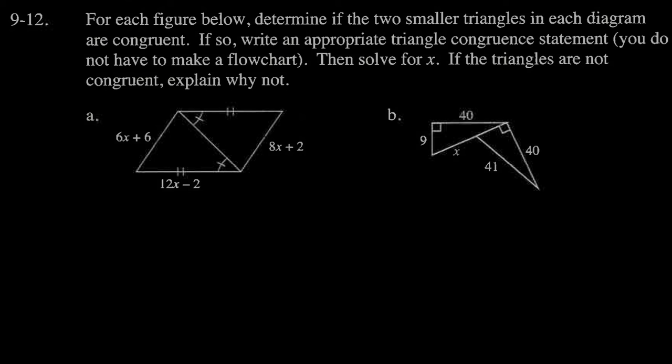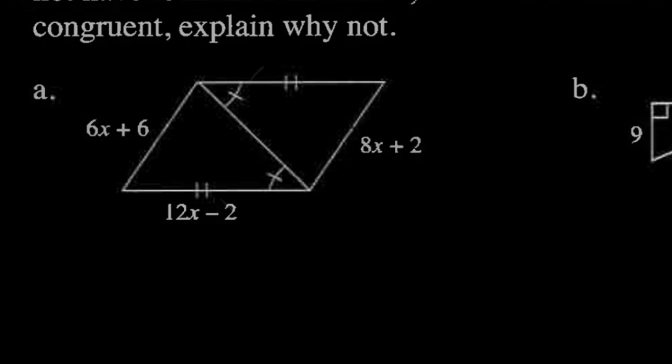Question number 12. For each figure below, determine if the two smaller triangles in each diagram are congruent. If so, write an appropriate triangle congruence statement. You do not have to make a flow chart. Then solve for x. If the triangles are not congruent, explain why not. Let's take a look at A.